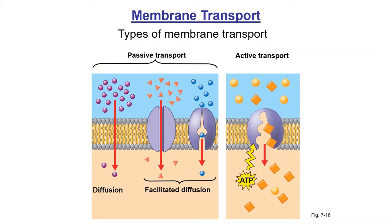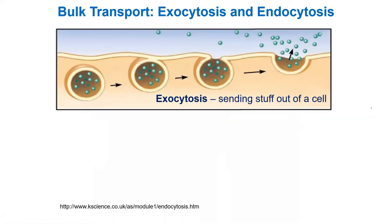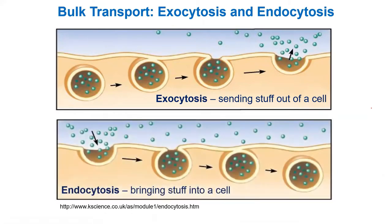Now there is one other type of active transport I want to talk about, which is called bulk transport. This means we are going to transport large things. The two main processes are getting things out — exocytosis — and getting things into a cell — endocytosis. 'Cyto' means cell and 'osis' means the process, so this means getting things in or out of the cell.